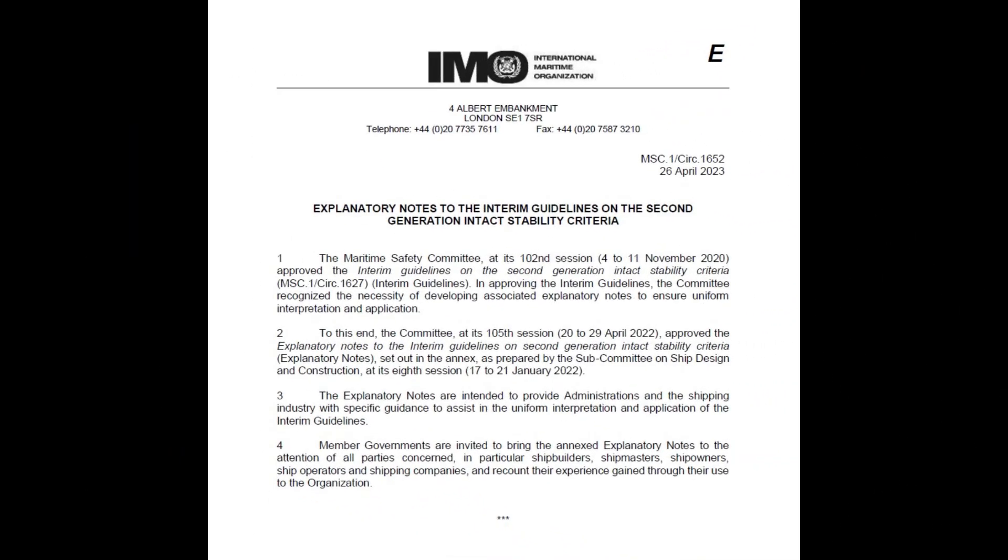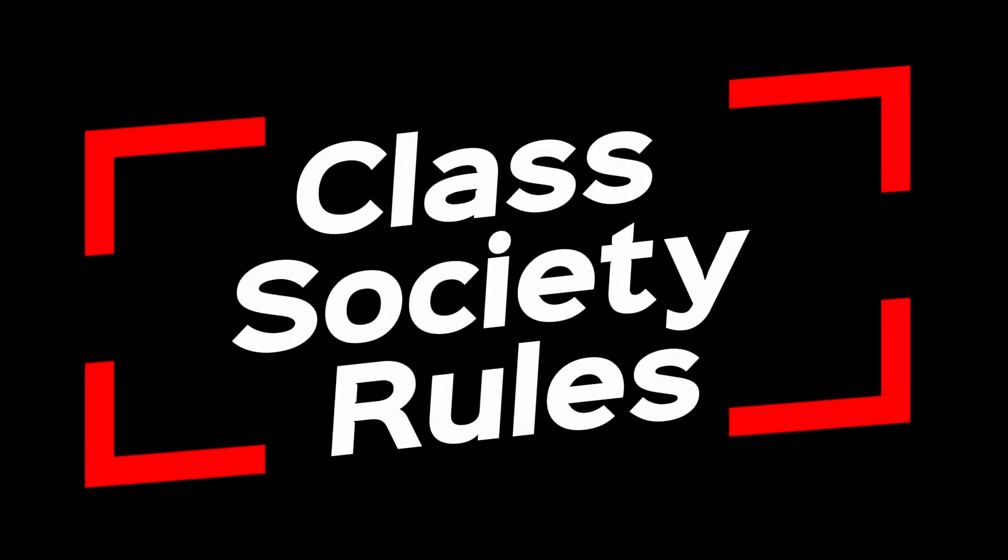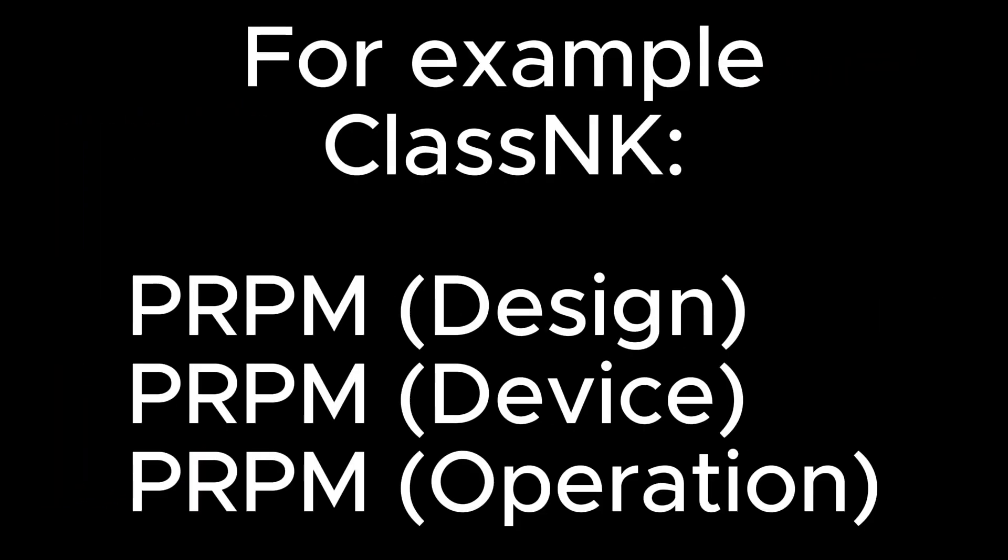The International Maritime Organization developed the second-generation intact stability criteria that address parametric rolling more comprehensively. Major classification societies have introduced new notations for ships fulfilling requirements necessary to counter parametric rolling.